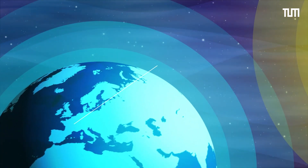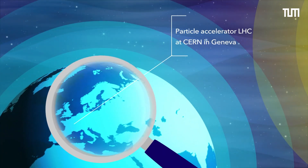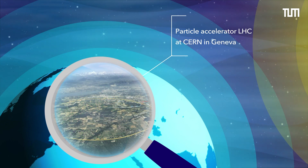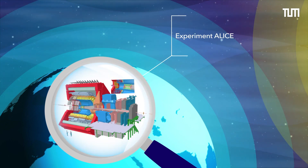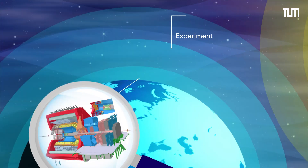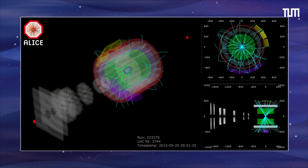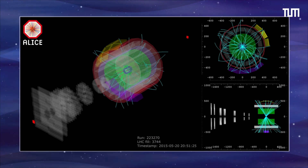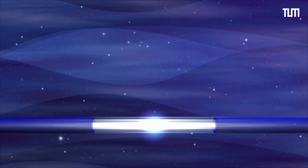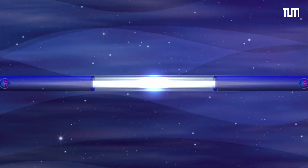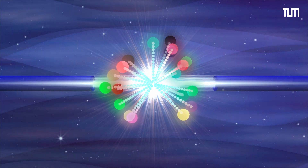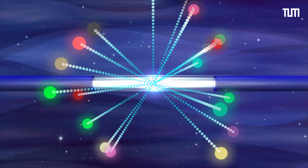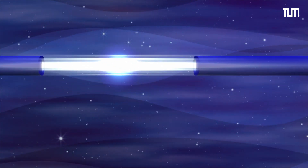Hyperons can be produced and studied at the LHC particle accelerator at CERN in Geneva. In a proton-proton collision at the experiment ALICE at the LHC, around 20 new particles are created, including hyperons. They are unstable and decay almost instantaneously, but can be recognized by their reconstructed trajectories.